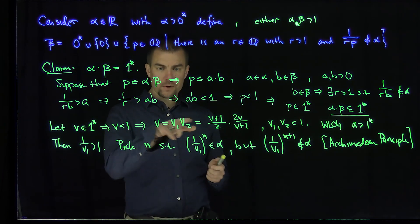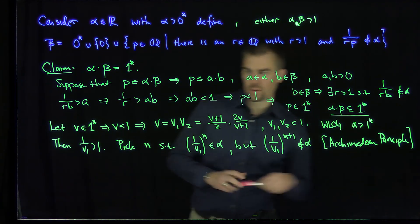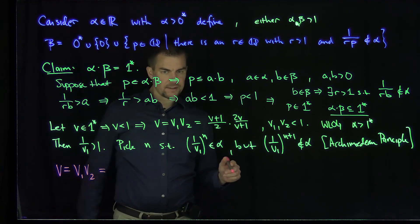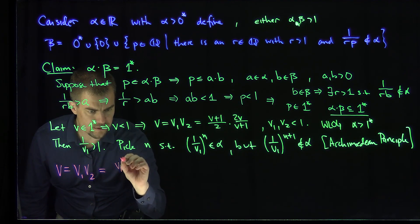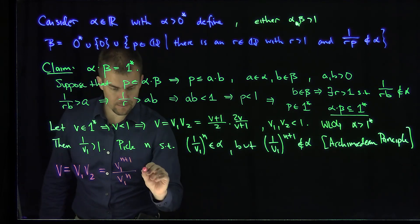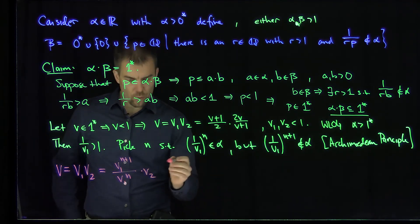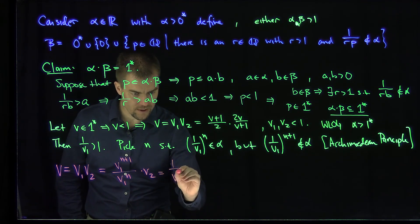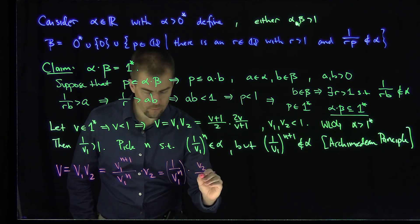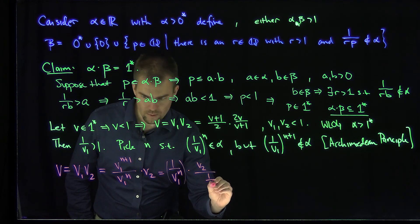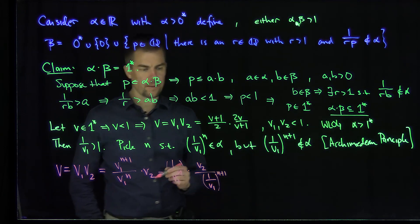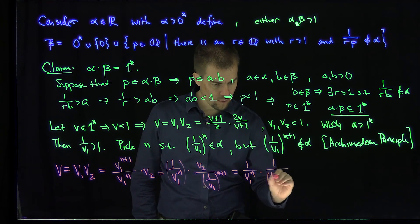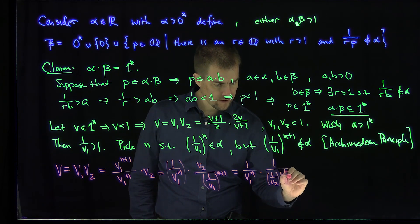Now v = v1·v2. We modify this slightly by writing v = v1^(n+1)/v1^n · v2, and then rewrite this as (1/v1^n) · (1/(1/v2)) · (1/v1^(n+1)).